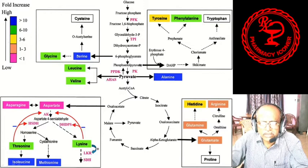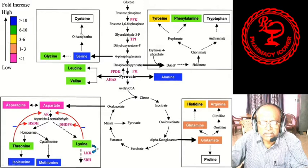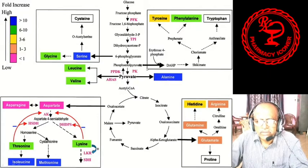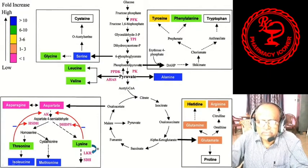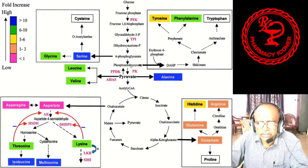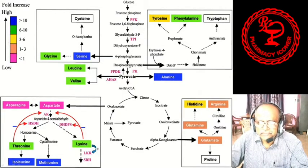From dihydroxyacetone phosphate, 3-phosphoglycerate is formed. From this 3-phosphoglycerate intermediate, serine is formed. From serine, glycine is formed; from serine, O-acetylserine is formed; and from O-acetylserine, cysteine is formed. On the other hand, from 3-phosphoglycerate, phosphoenolpyruvate (PEP) is formed, which is one of the precursors in the shikimic acid pathway.